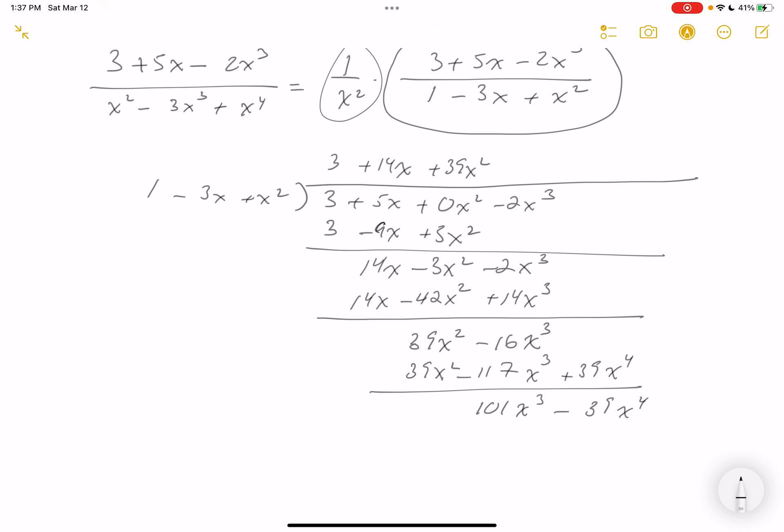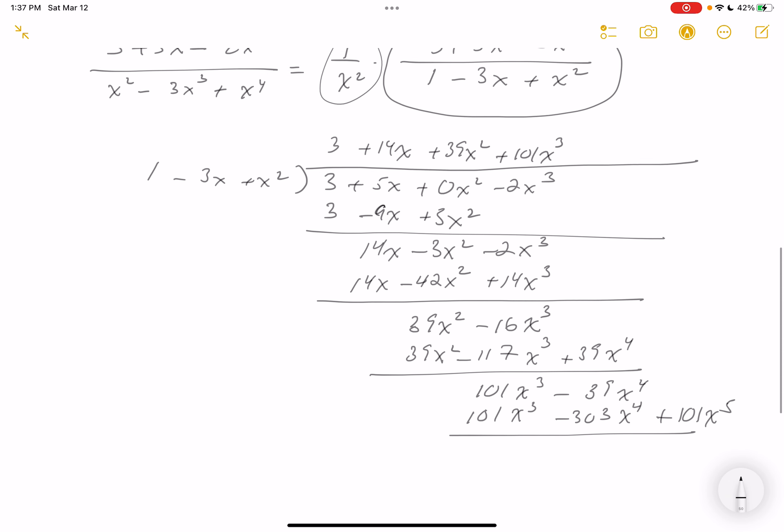I'm going to do another matching game. We're at the fourth term now. So 101x cubed, that's 101x cubed, and then you get minus 303x to the fourth, and I'm going to get plus 101x to the fifth. I think we're almost there.